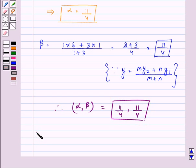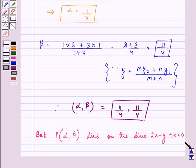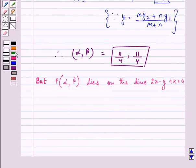Further, we are given that point P, that is having coordinates as alpha and beta, lies on the line 2x minus Y plus K equals 0. We have the value of X and Y, that is the coordinates of P, alpha and beta, as 11 by 4 and 11 by 4 respectively.